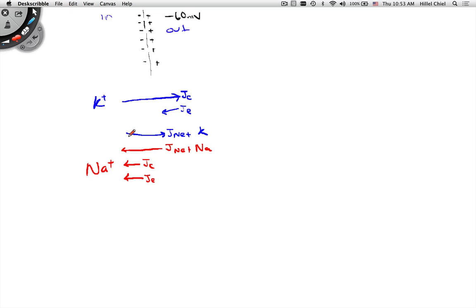And what has to be true about those net fluxes? These should be equal, right? And opposite. Yeah. Because we're at a steady state. We're not changing our... Right. So the membrane potential isn't changing. That means the net flux of current in and out has to be zero.